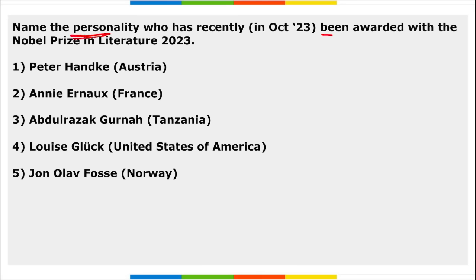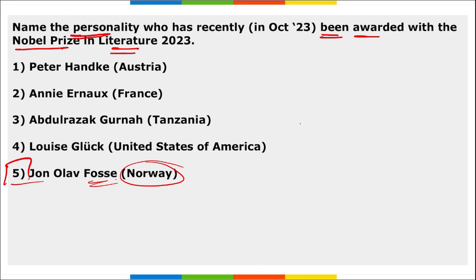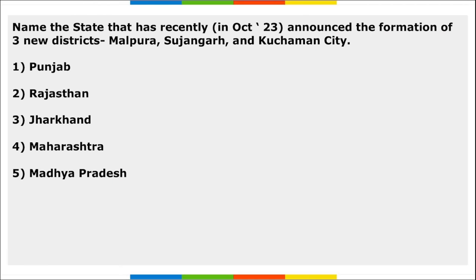Jon Olav Fosse of Norway has been awarded the Nobel Prize in Literature for his innovative plays and prose which give voice to the unsayable. He is the fourth Norwegian writer to win the Nobel Prize in Literature.